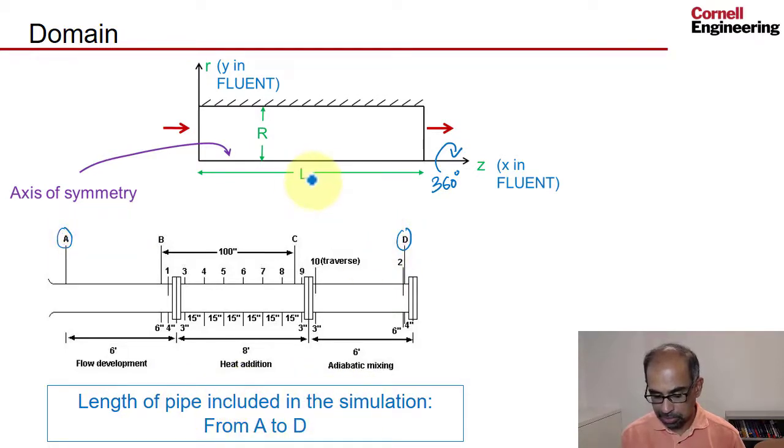So this length L is going to be from A to D. In the experimental setup, the pipe continues and you have a fan here and so on, but we don't include that in the simulation. We will use the experimentally determined pressure as a boundary condition over there, and that way we can ignore this part of the pipe.